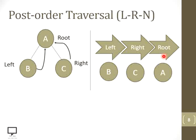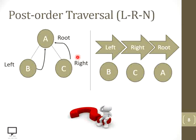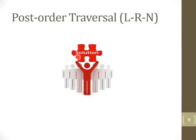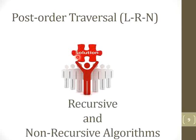That's why it is showing the result like B, C, A — left, right, and root node. Now observe how to return back from a right child to a root node. We have a solution for this: the solution is recursive and non-recursive algorithms for post-order traversal. Here I am focusing on the recursive post-order traversal algorithm.